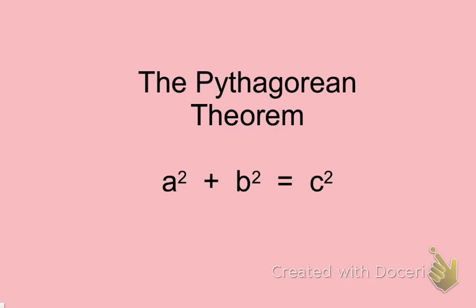Hi everyone. Welcome to our first lesson on the Pythagorean Theorem. The Pythagorean Theorem is a theorem that deals specifically with right triangles, which are triangles that have a right angle in them. A right angle is an angle that is exactly 90 degrees.